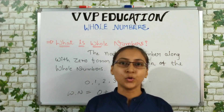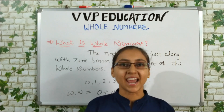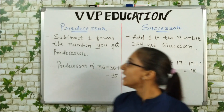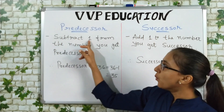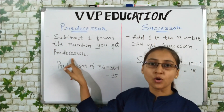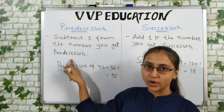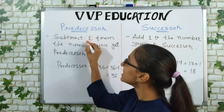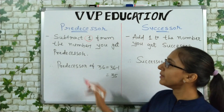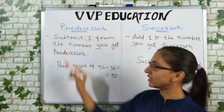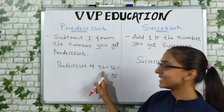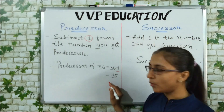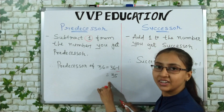Let's move to our next topic — predecessor and successor. What is predecessor? When you subtract 1 from a number, you get the predecessor of that number. So the predecessor of 36 is equal to 36 minus 1, that is 35. So predecessor of 36 is 35.